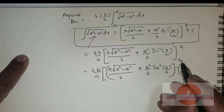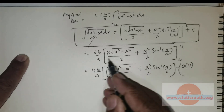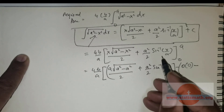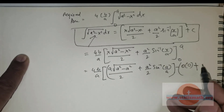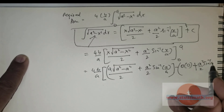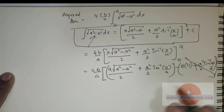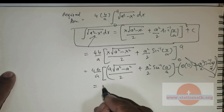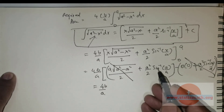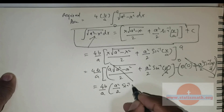Substituting the lower limit, which is 0 — when you substitute the value 0, everything is going to be 0, so there's no point substituting further. For the upper limit, a squared over 2 times sine inverse of 0 over a gives 0. So clearly, sine inverse of 0 is 0. You have 4b divided by a — a squared minus a squared is 0. The only term remaining is a squared divided by 2, and a over a cancels, giving sine inverse of 1.